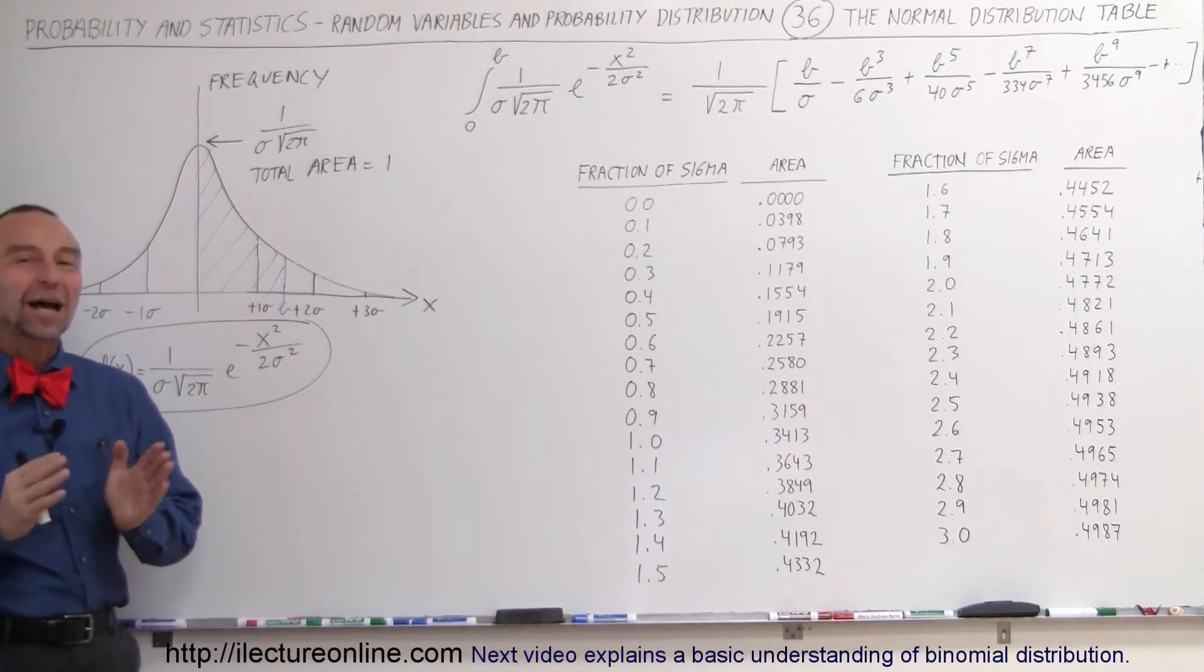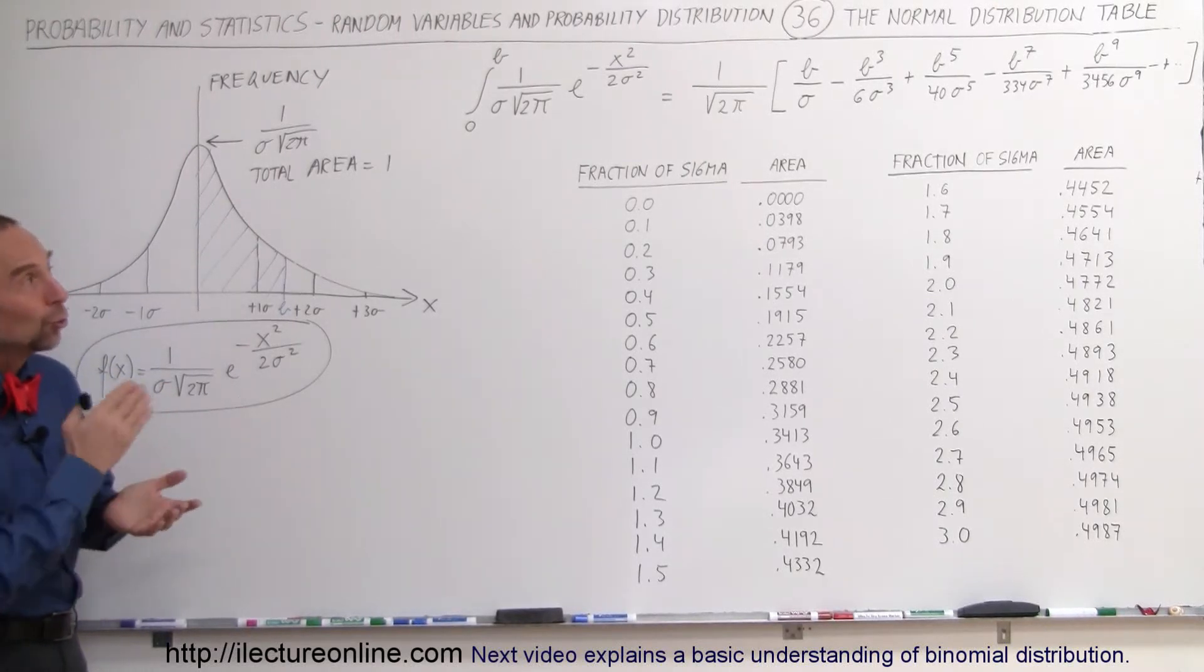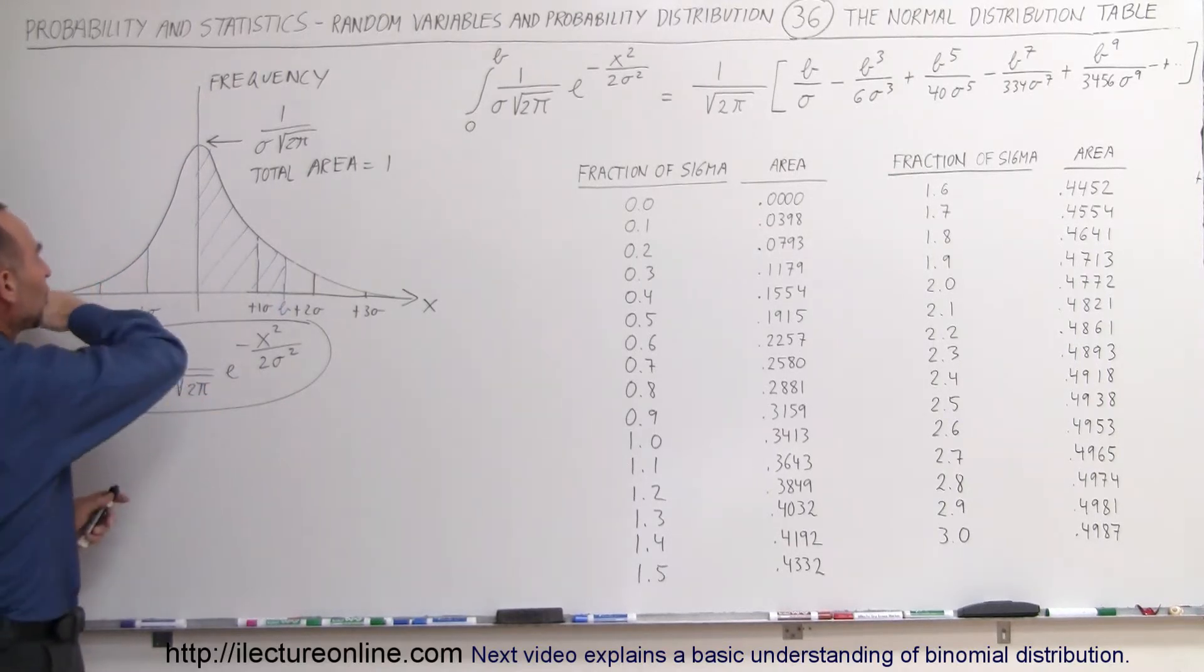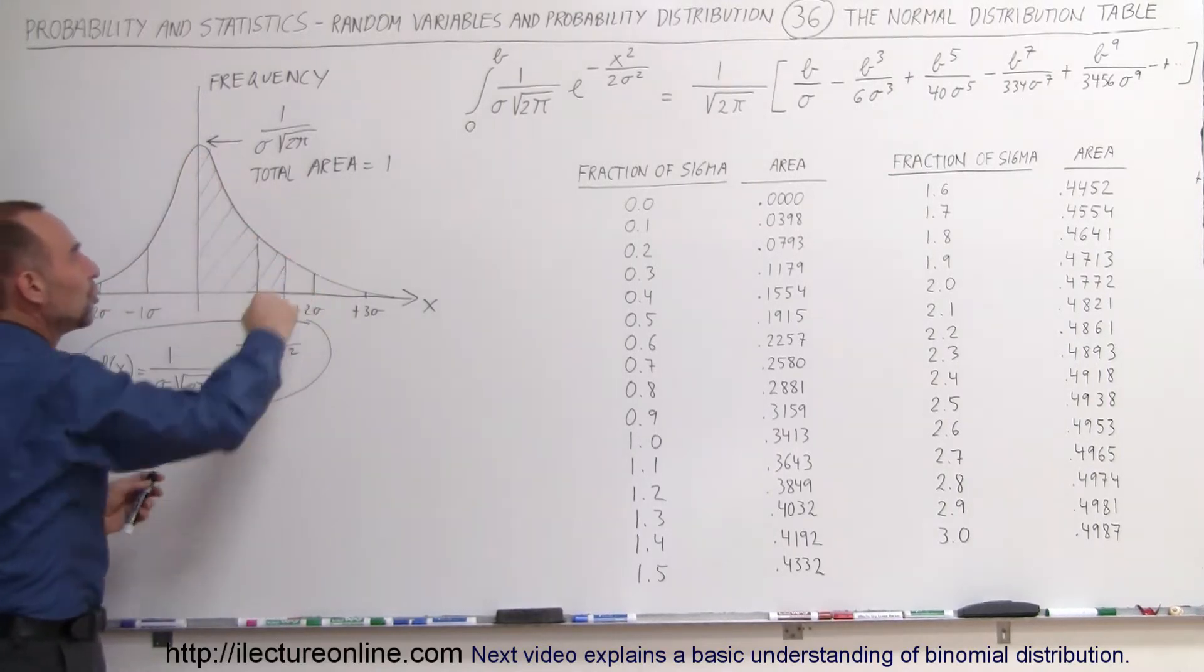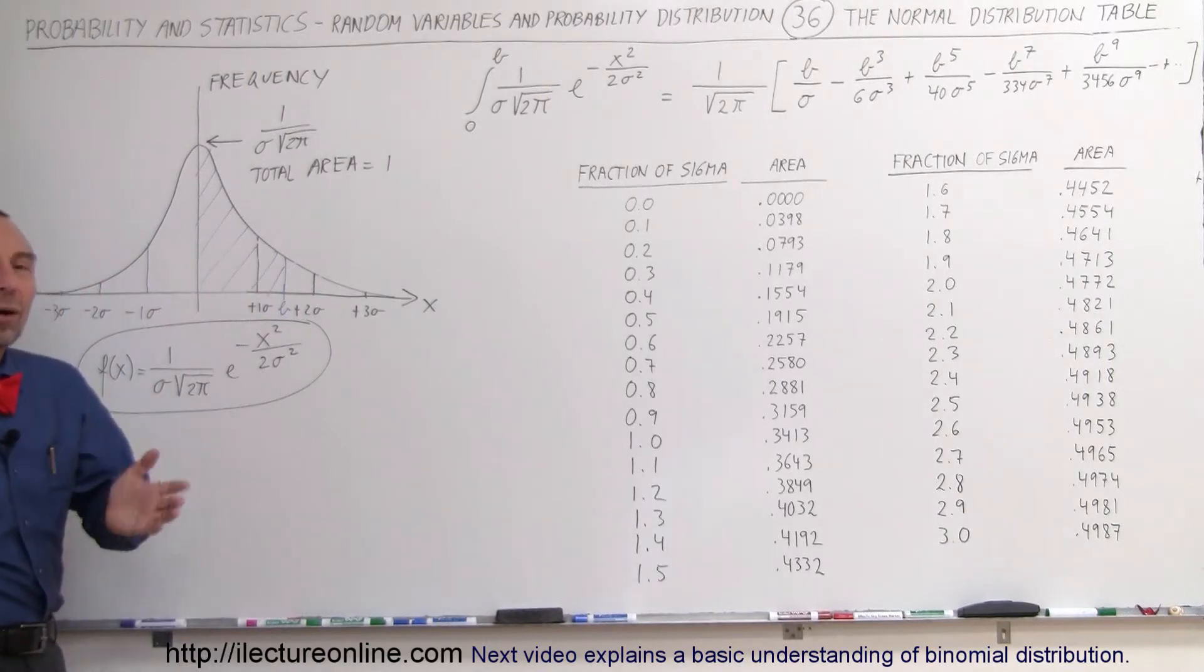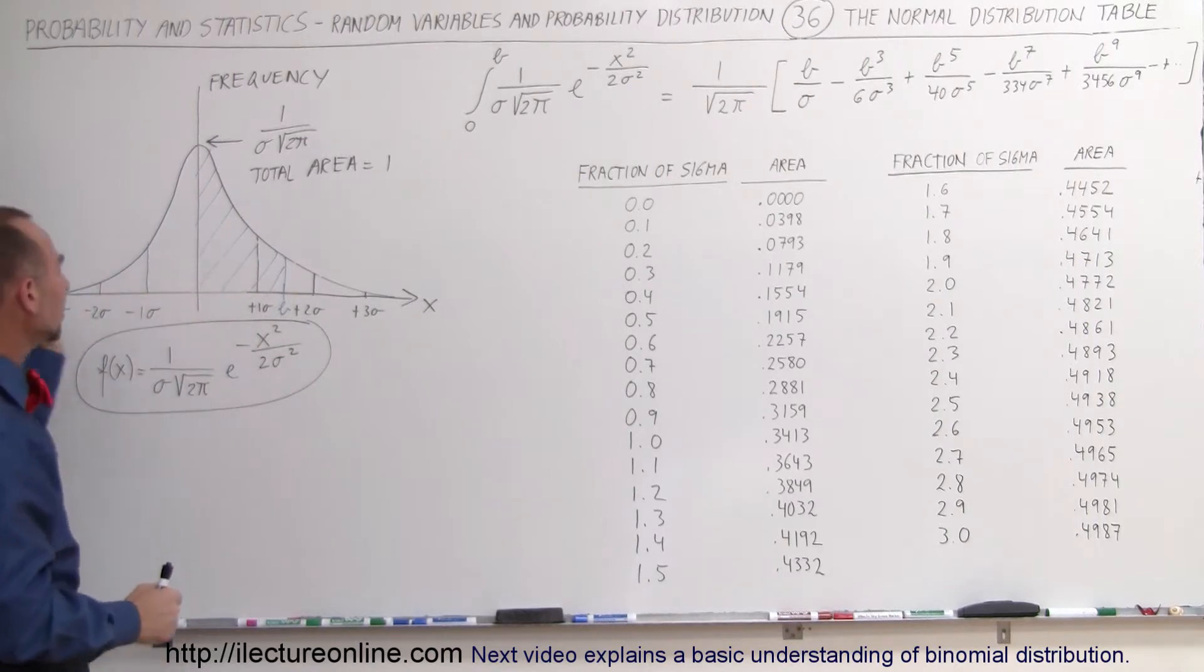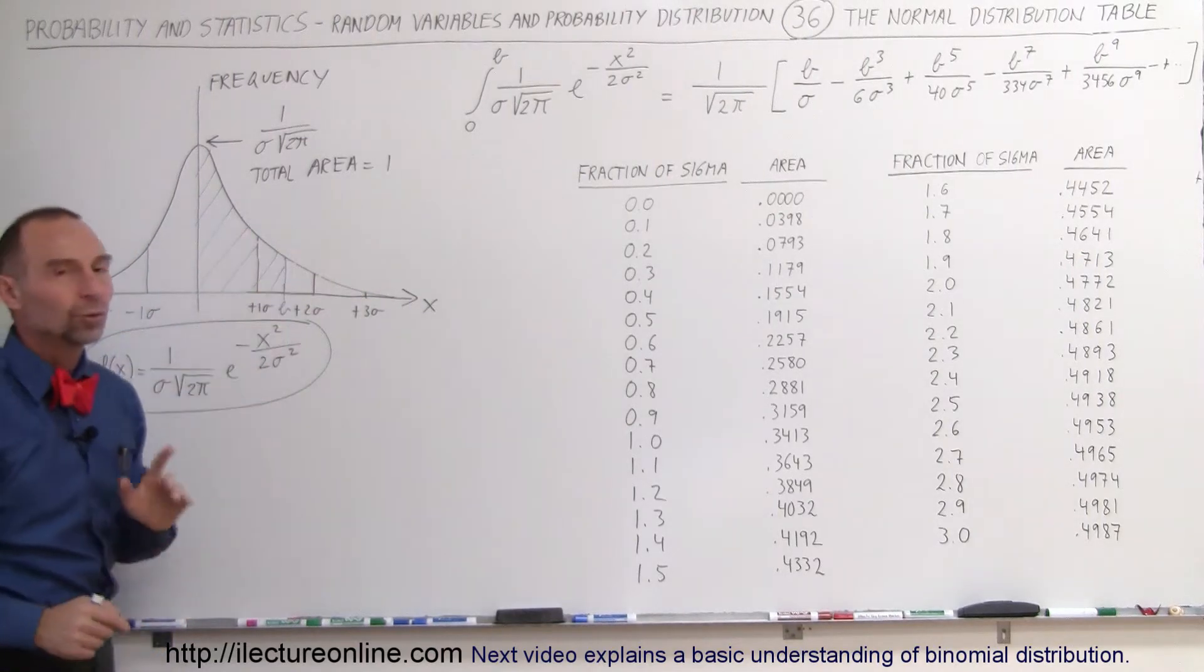Welcome to Adelaide lecture online and now we're going to take a look at what we call the normal distribution table. Remember here we have what we call a normal distribution of values and the reason why we call it a normal distribution is because the total area underneath the whole curve from negative infinity to positive infinity is going to be equal to 1.